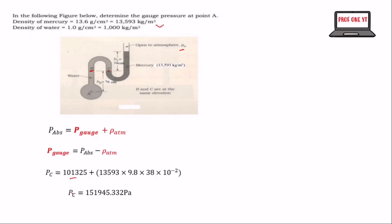Now, moving to point A to find the absolute pressure at A, there is a pressure acting on B and a pressure at A itself. We find the pressure at B plus rho·g·h to get the absolute pressure at A. That sums to pressure at B plus rho·g·h, where the liquid is water, giving us 1000 kg/m³ times 9.8 times 76 times 10 to the exponent negative 2.